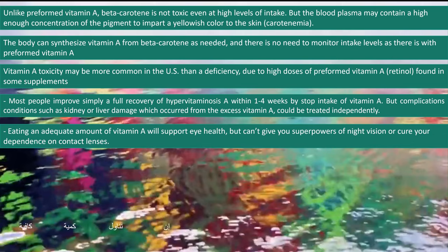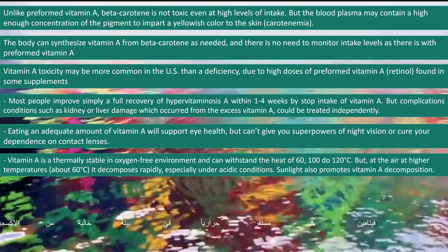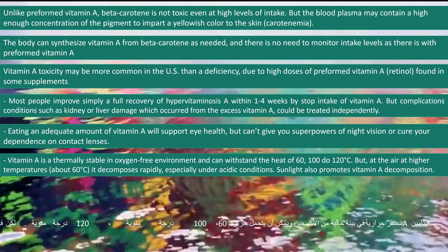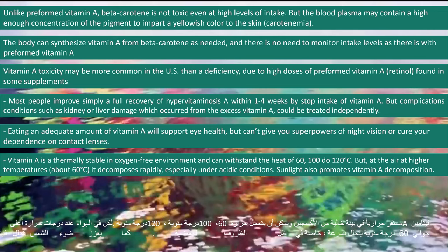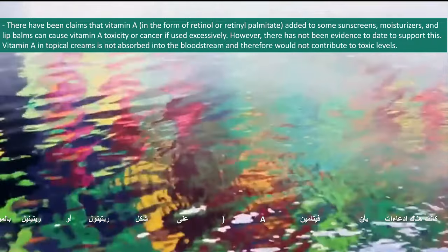Eating an adequate amount of vitamin A will support eye health, but cannot give you superpowers of night vision or cure your dependence on contact lenses. Vitamin A is stable in a thermally stable and oxygen-free environment and can withstand heat of 100 to 120 degrees Celsius, but at higher temperatures — about 60 degrees Celsius in air — it decomposes rapidly, especially under acidic conditions. Sunlight also promotes vitamin A decomposition.